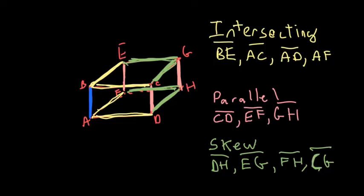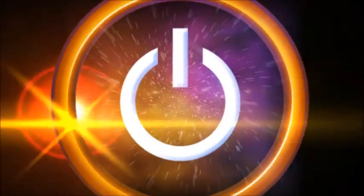All right, so you notice I colored in every single line on that rectangular prism. So if you're looking at a rectangular prism, there's only three options—the lines can be intersecting, parallel, or skew.